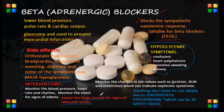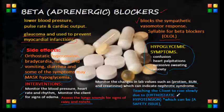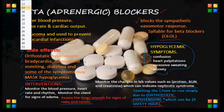When a patient is taking beta blockers, it is very important to monitor lab values such as protein, BUN, and creatinine, which can indicate a problem such as nephrotic syndrome. As nurses, you can do teaching to the client such as telling patients to rise slowly due to orthostatic hypotension, which can be a safety issue. We also need to report signs of bradycardia, dizziness, confusion, or fever because it can mask other problems. It is also important to taper this medication properly.